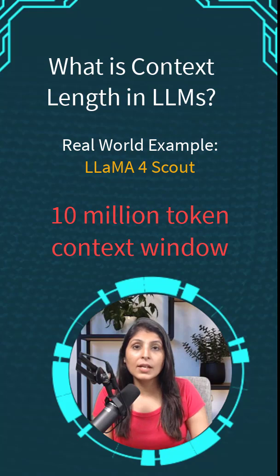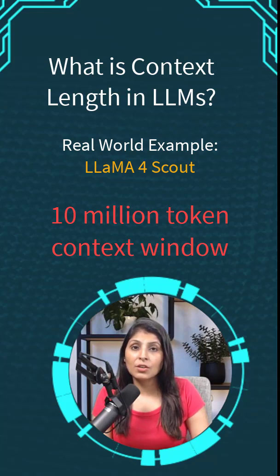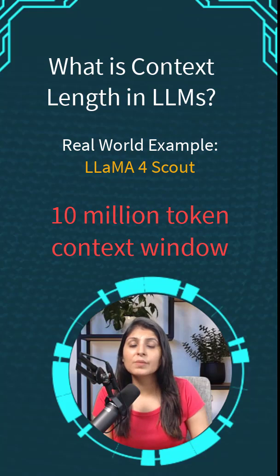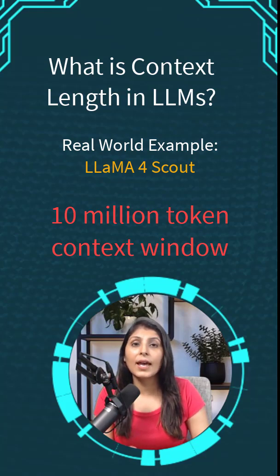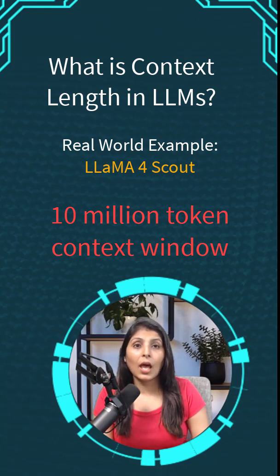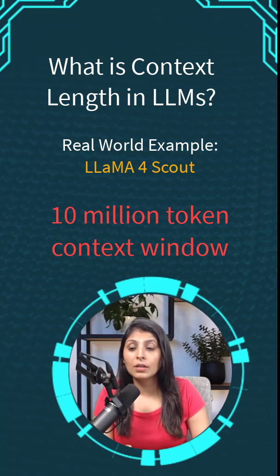That means it can remember really long conversations and documents. So this context length is basically how much text an LLM can hold in memory, and it affects how smart the LLM's responses are.